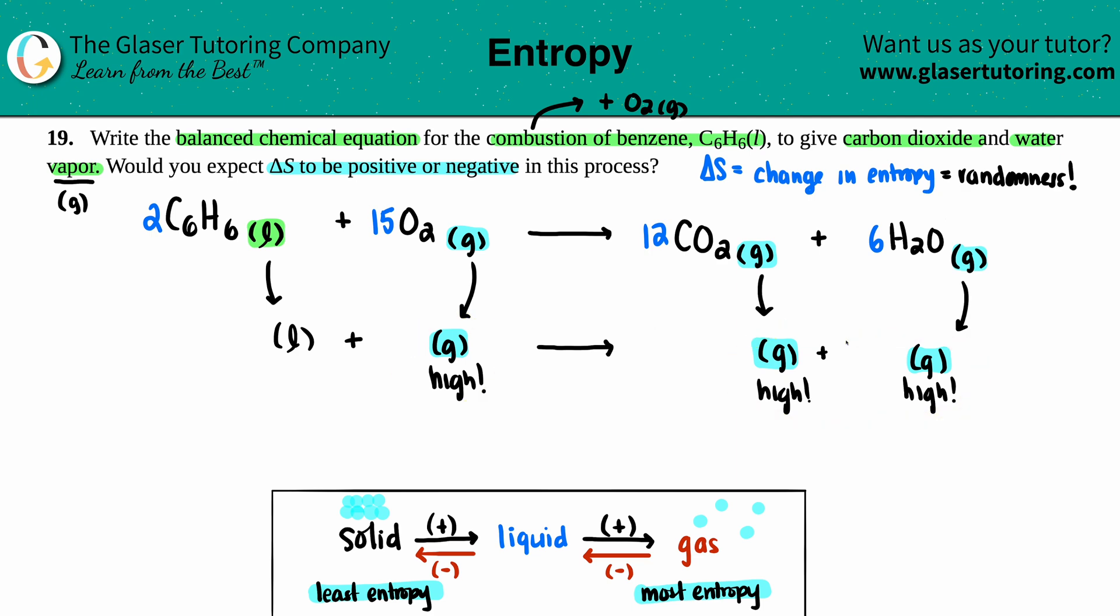I have 15 gases here, so I have 15 starting off with 15 gas molecules here, and I have 12 over here, so 12 and 6. Let's just tally this all up: I'm starting with 15 gases and I'm ending with 12 plus 6 is 18.